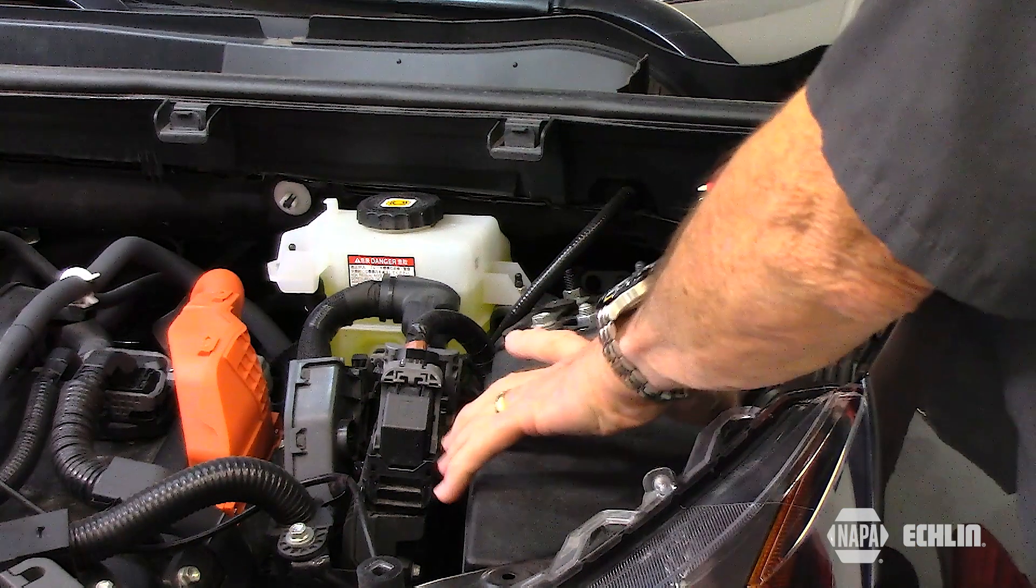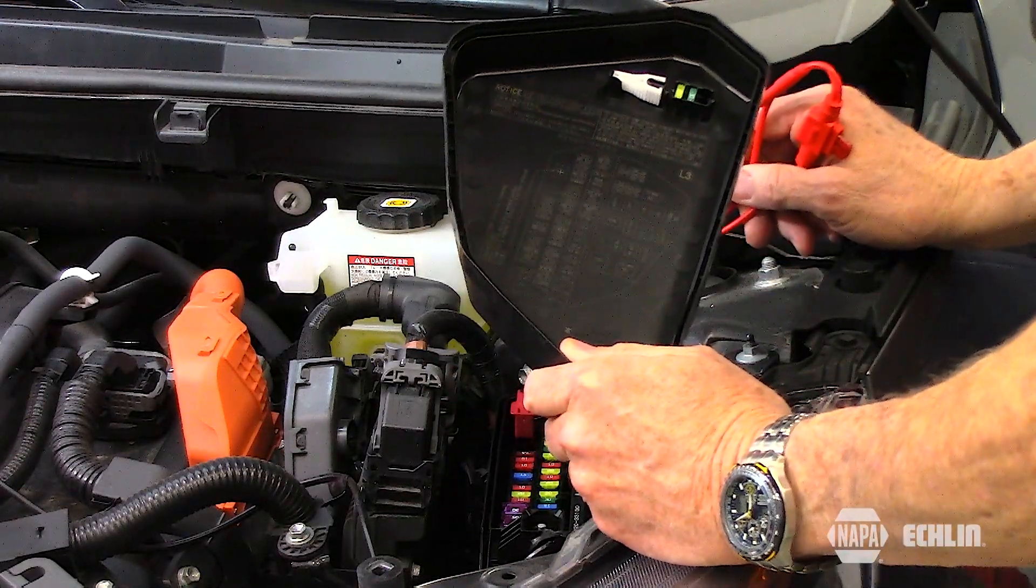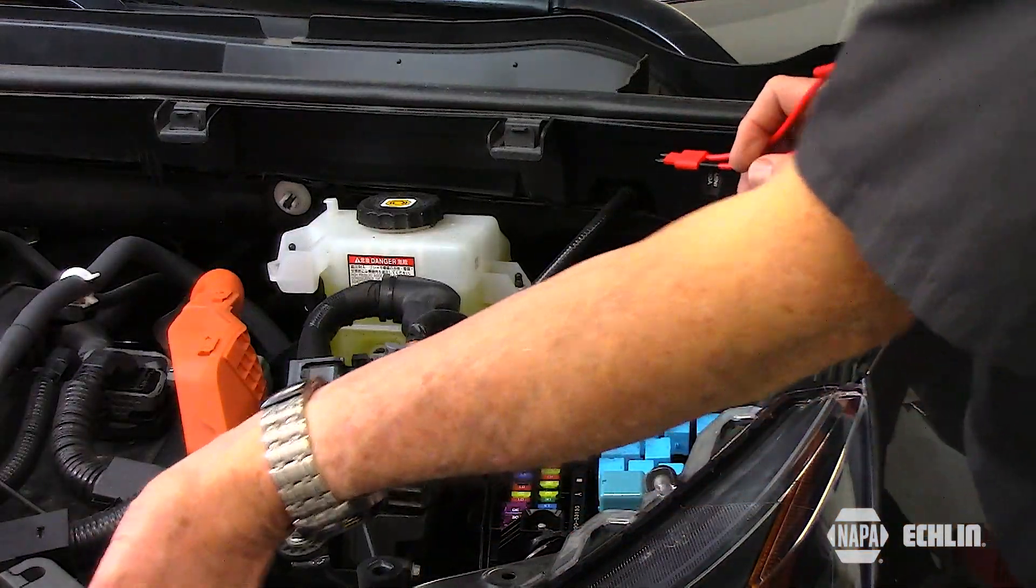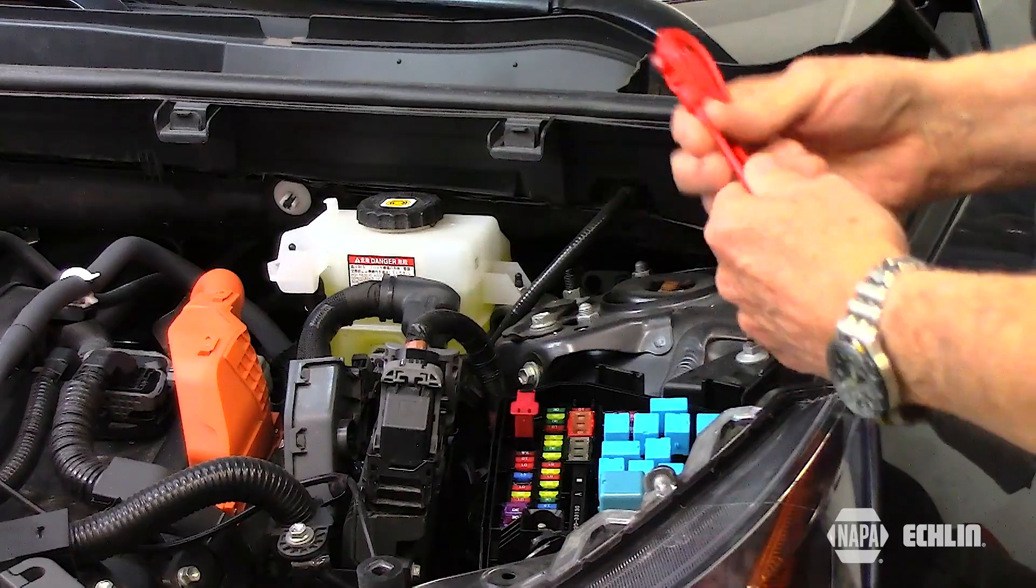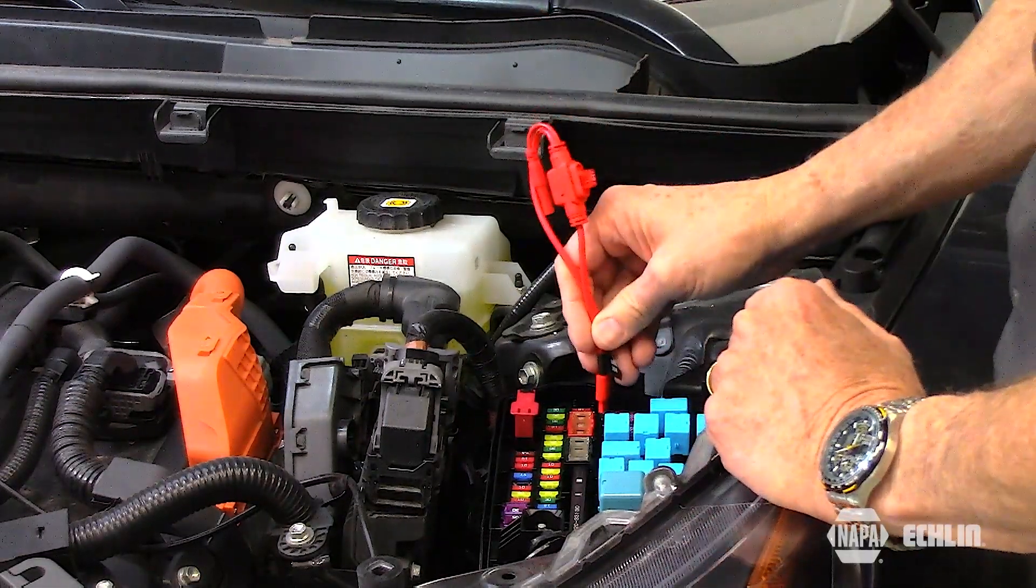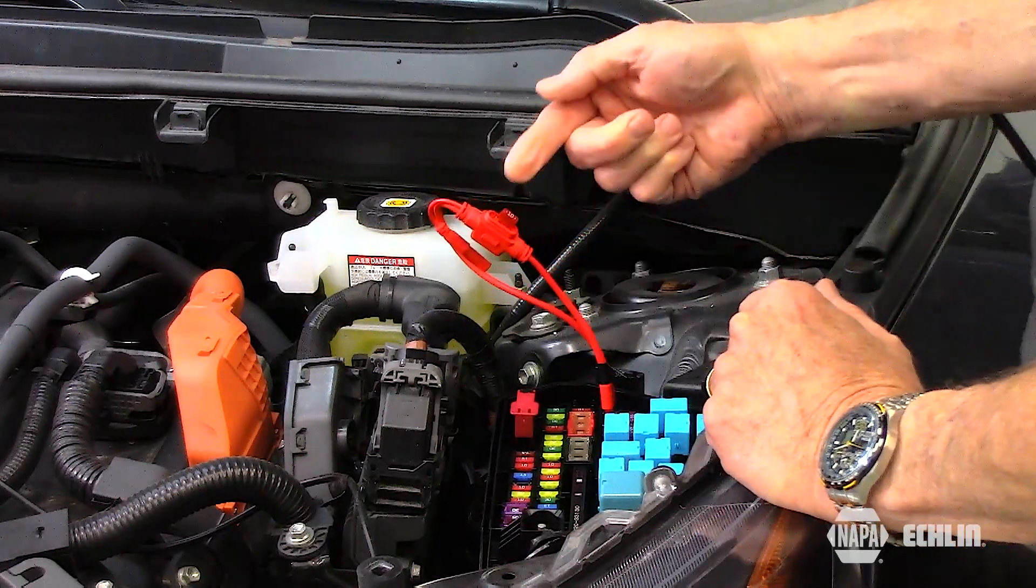So I'm here at the fuse box. I remove the fuse box cover and I simply use the factory fuse identifier locator. I found the ignition fuse. It's a little 10 amp fuse over here in the corner. I remove the fuse but I installed it in my little fuse jumper wire here. So I put my fuse jumper wire back across that 10 amp circuit like so.